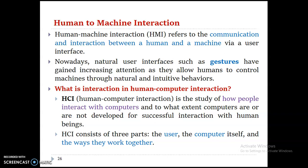Human-computer interaction is the idea of how people interact with their computer and to what extent computers are developed for successful interaction with human beings. In human-computer interaction, we have three parties: the first one is the user, the second one is the computer, and the third one is the way they work together.